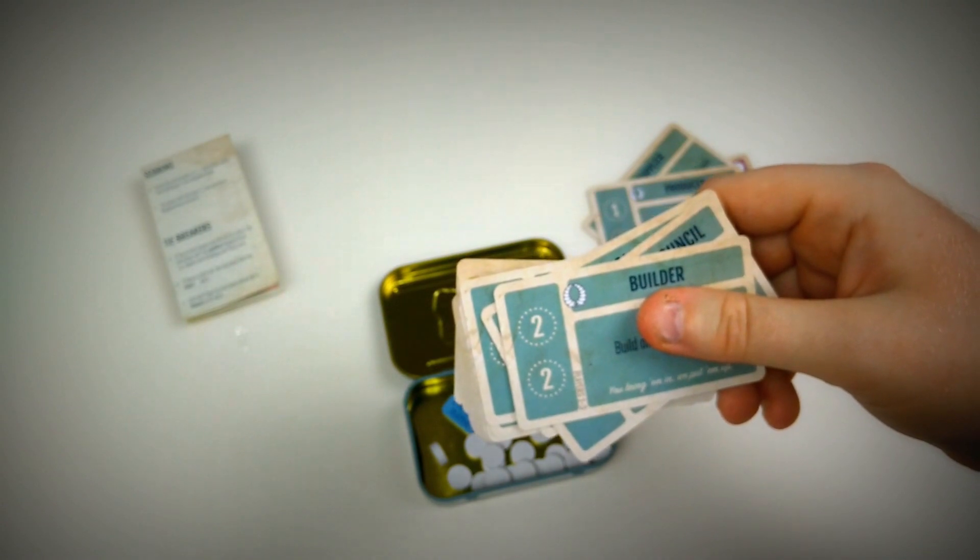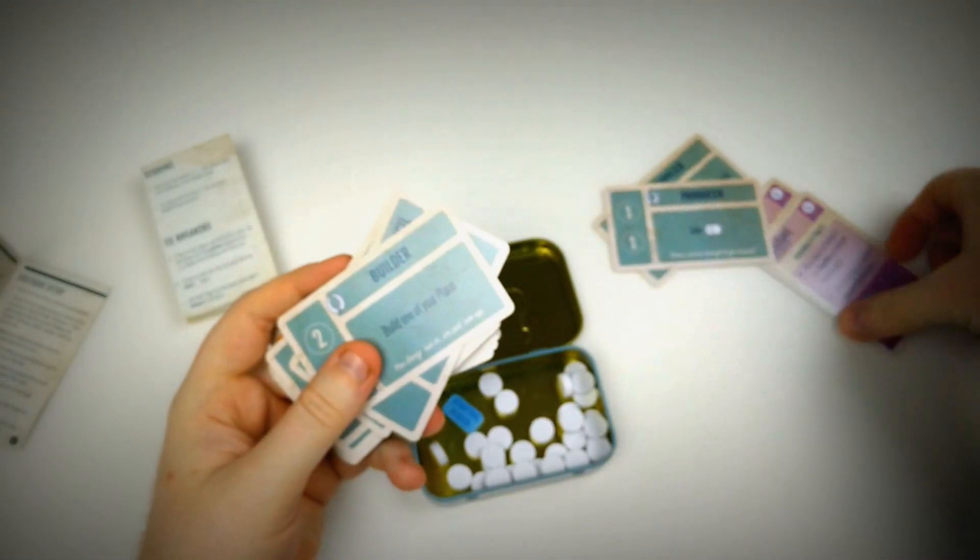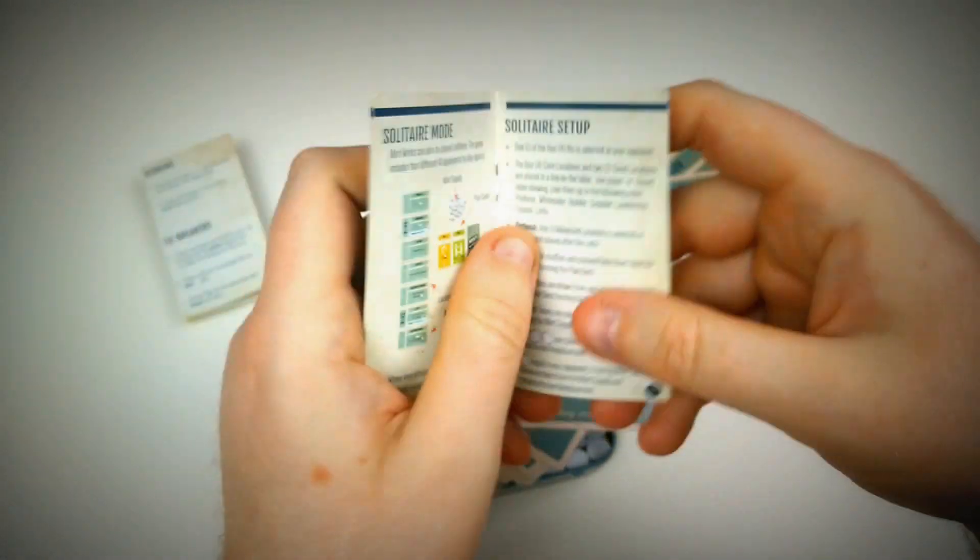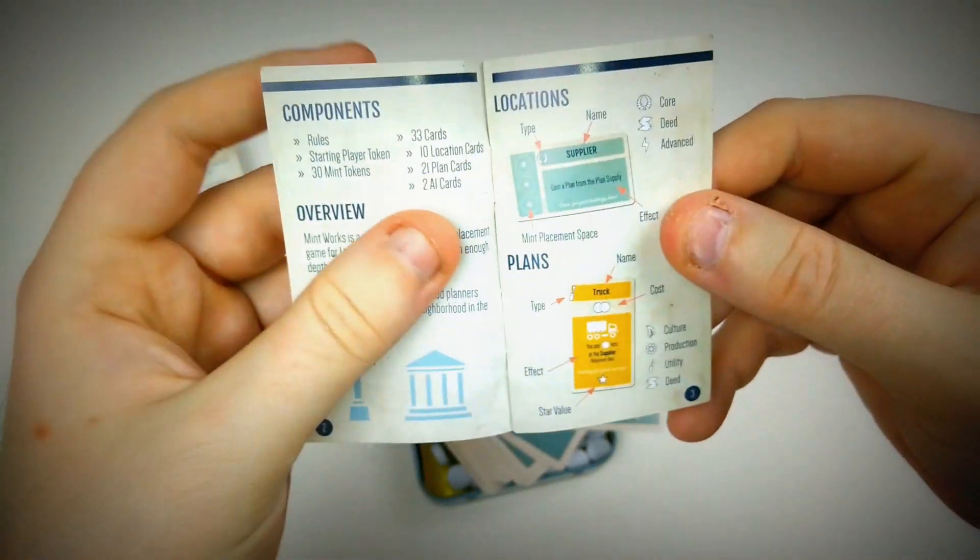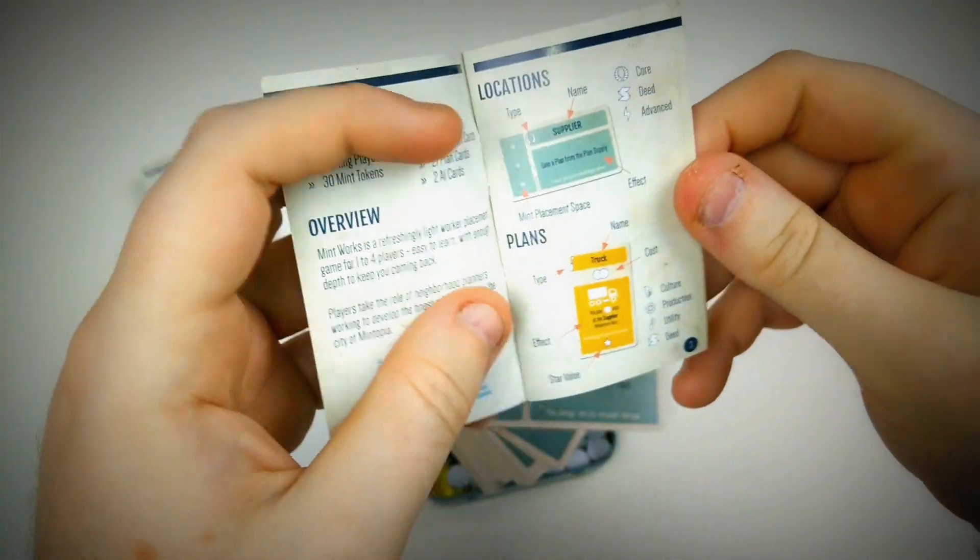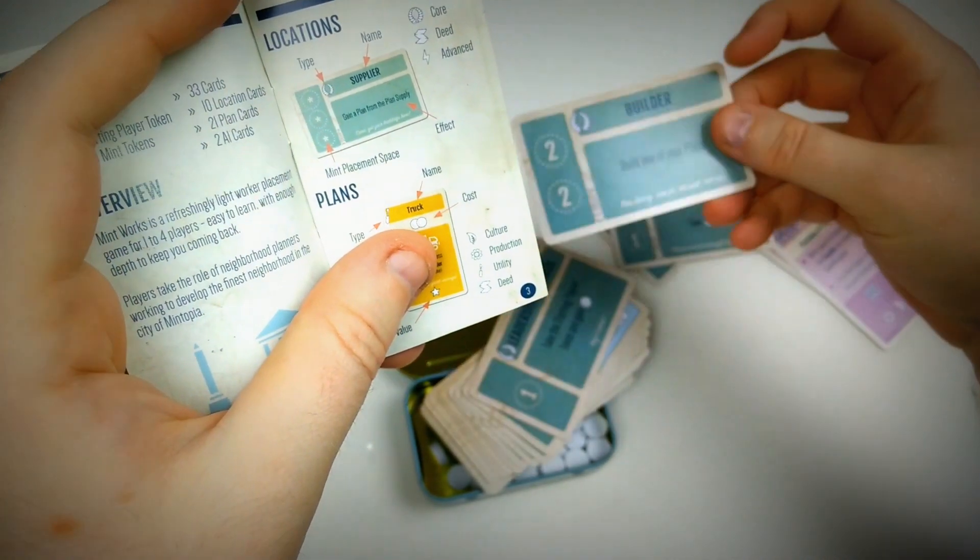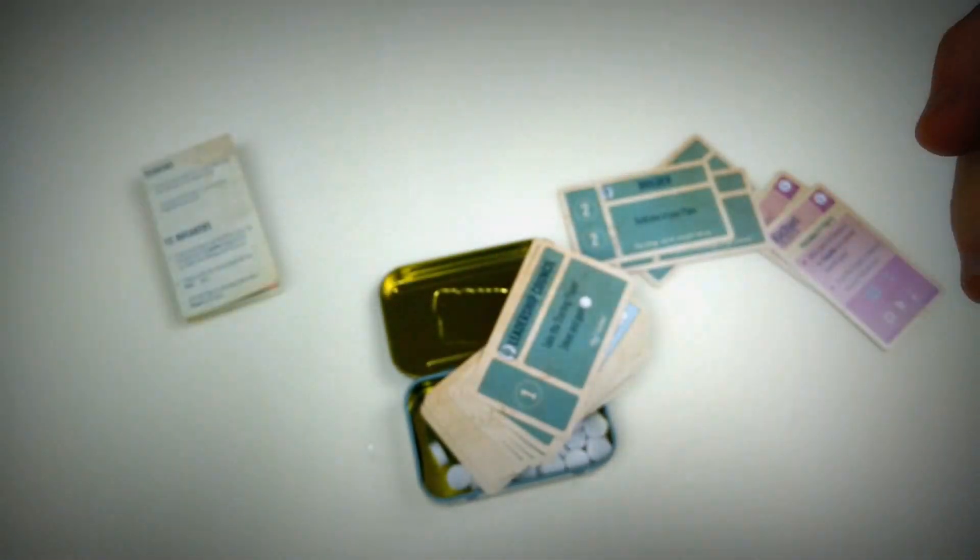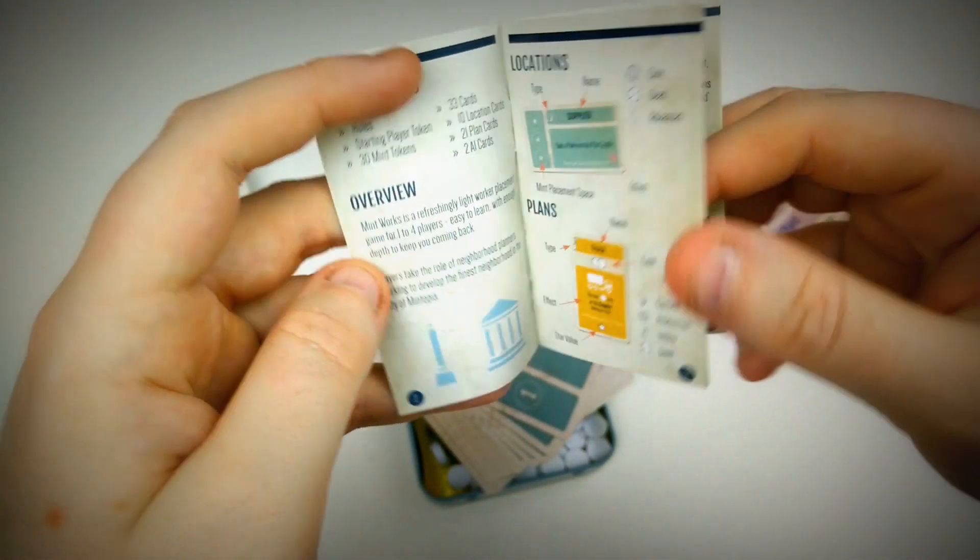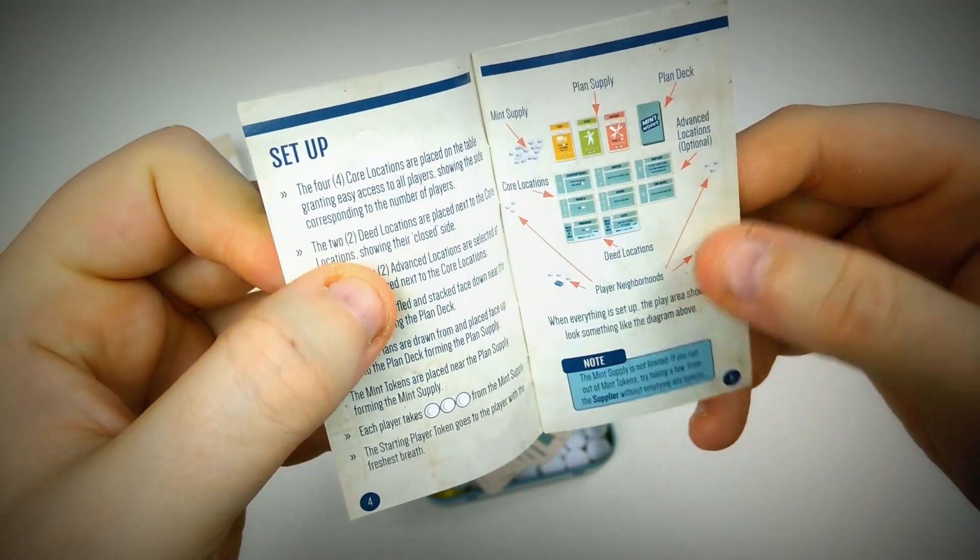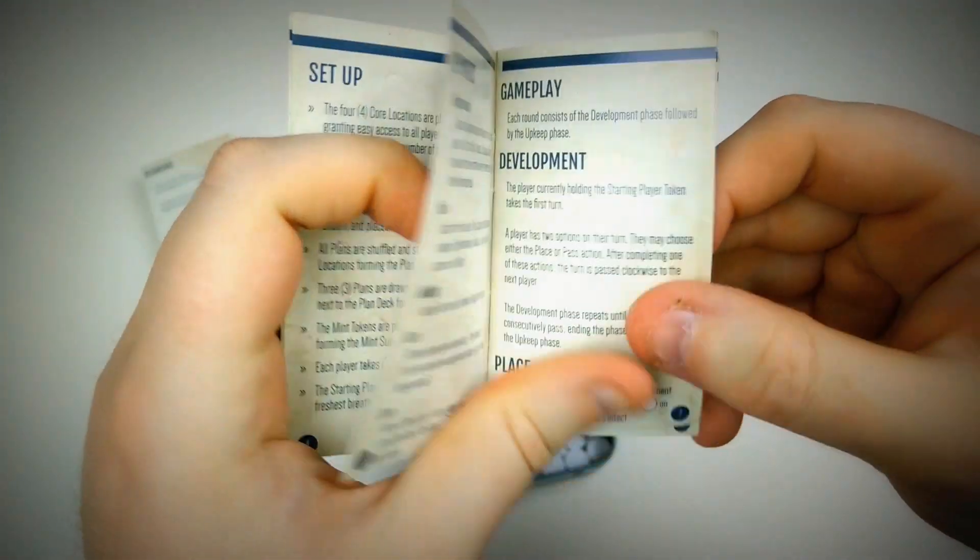And these are the... I don't know what these are. It's not written in the book. So we have the locations over here. These are different locations where you can put your workers on it, or your mints.